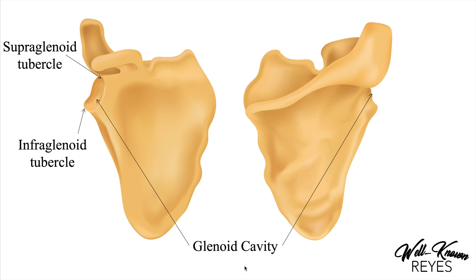The first thing we're going to discuss is the glenoid cavity, which sits right here. Now it is also right here but you can't see it very well because this is the posterior view. The glenoid cavity is where the head of the humerus attaches to the scapula. The muscles that originate on the scapula insert onto the head of the humerus, and when they contract they pull on the head of the humerus and do actions such as abduction, lateral rotation, medial rotation, and adduction — stuff we'll cover in another video. For now, just know this is the glenoid cavity.